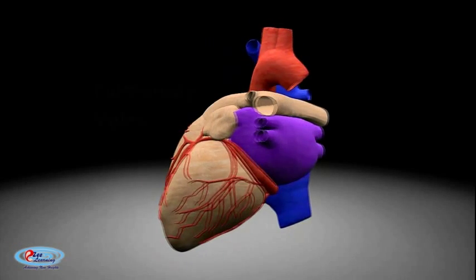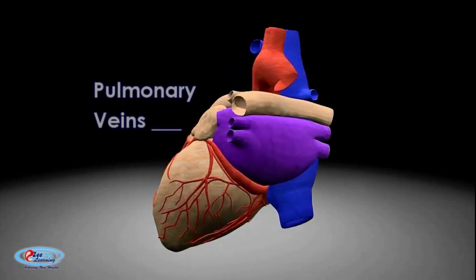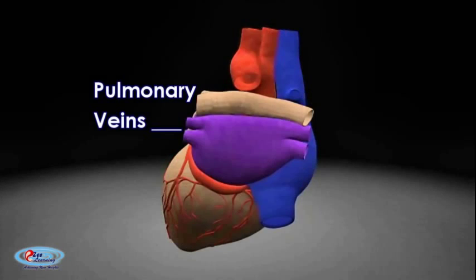The pulmonary veins are large blood vessels that carry oxygenated blood from the lungs to the left atrium of the heart. In humans, there are four pulmonary veins, two from each lung. They carry oxygenated blood, which is unusual, since almost all other veins carry deoxygenated blood.